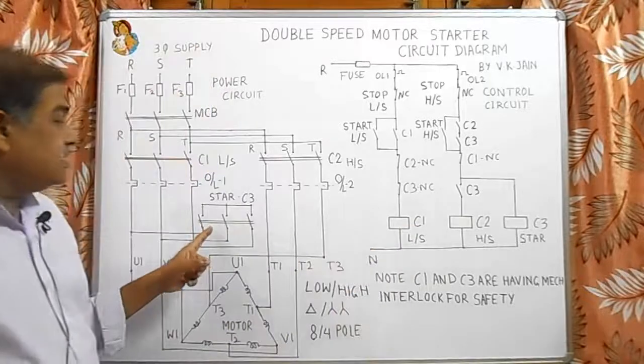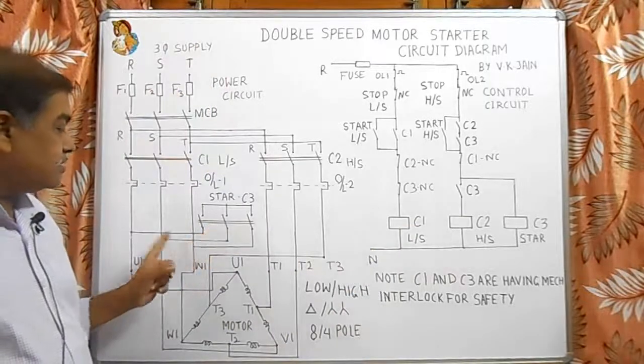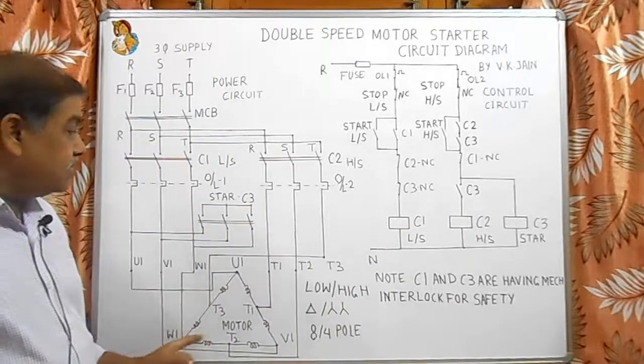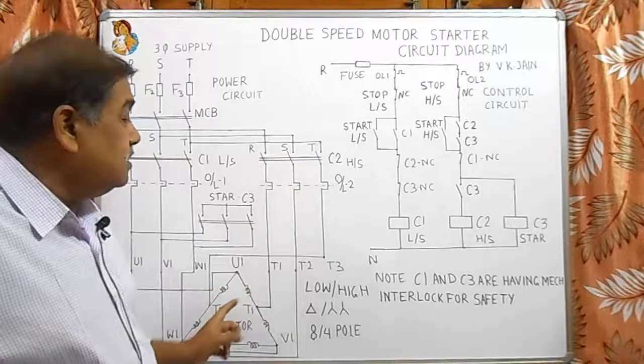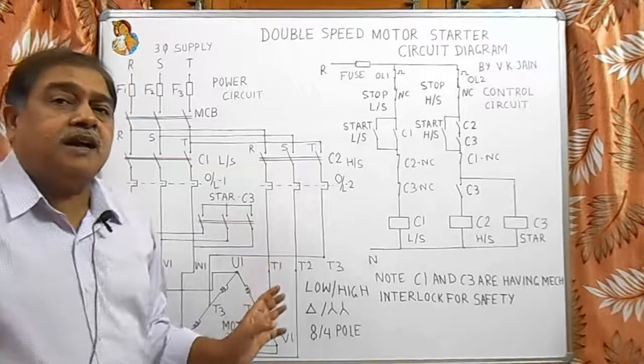So, here C3 contactor makes the star contact for this U1, V1 and W1 and C2 gives supply to the terminal T1, T2 and T3. So, motor starts at high speed.